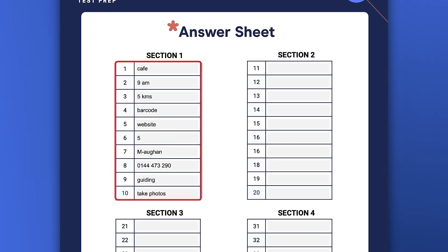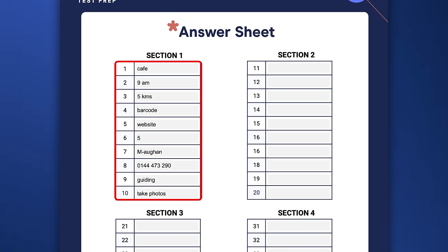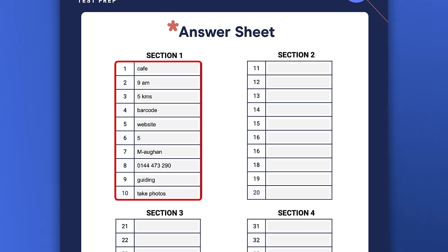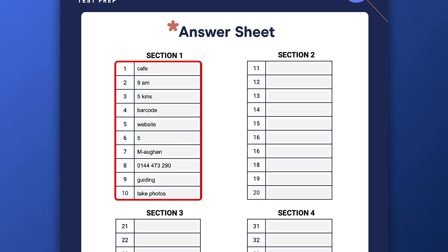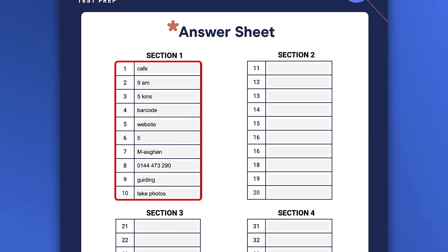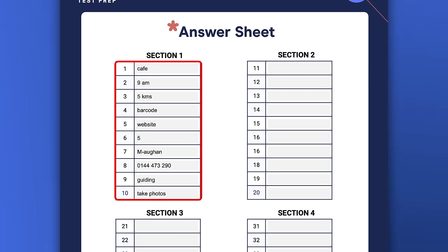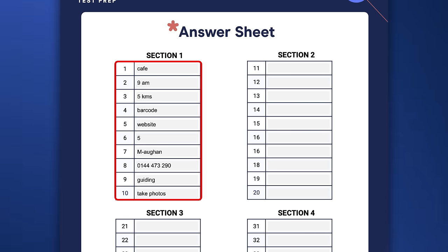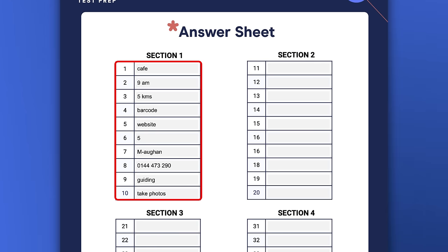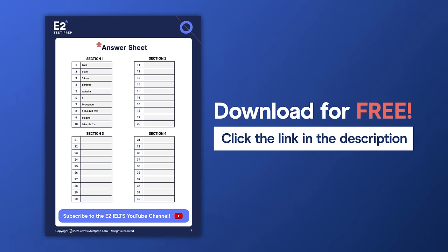How did you go? Let's have a look at the correct answers. Number one is café. For number two, you can write the time as 9am or 9 o'clock, as a number or a word. With number three, kilometres can be spelled the American or British way — both are correct, or you can simply write KM. For number four and five, barcode and website can be one word or two words — both are okay. The answer to question six is five. For the family name in number seven, make sure you use a capital letter at the start. Notice how with some questions such as number 10, there is more than one correct answer.